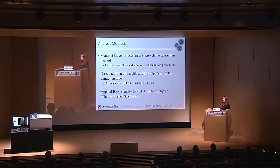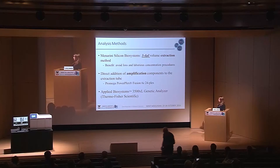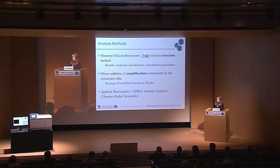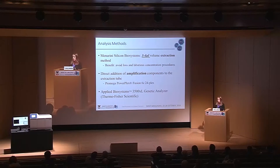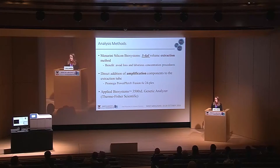Once we recover those cells, we proceed to DNA analyses. We use the Silicon Biosystems extraction method, which has many benefits: we avoid loss of cells from transferring, we keep the cells in the same tube, and we avoid laborious concentration procedures. Another benefit is that we can directly add our amplification components straight into our extraction tubes. The kits we use are Promega PowerPlex 6C Fusion kits. After we amplify the DNA, we detect it through the Applied Biosystems 3500 Genetic Analyzer.